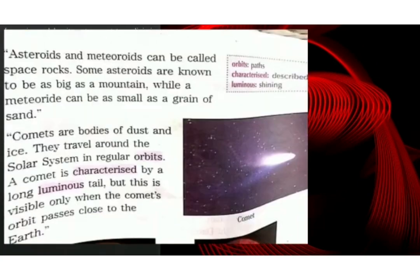'Asteroids and meteoroids can be called space rocks. Some asteroids are known to be as big as a mountain, while a meteorite can be as small as a grain of sand. Comets are bodies of dust and ice. They travel around the Solar System in regular orbits. A comet is characterized by a long luminous tail, but this is visible only when the comet's orbit passes close to the Earth.'